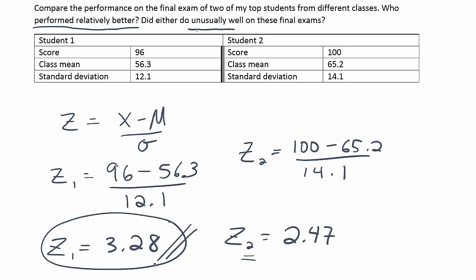But student one still, because the class average was lower and the standard deviation was smaller, he was able to get a full 3.28 standard deviations above average on that test, which indicates an exceptional performance. And as a result, we're going to say he did better than student two.